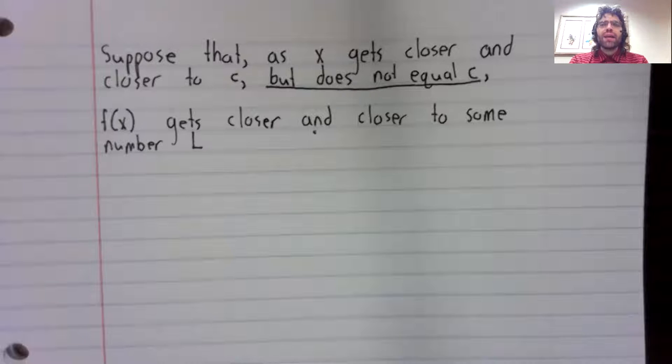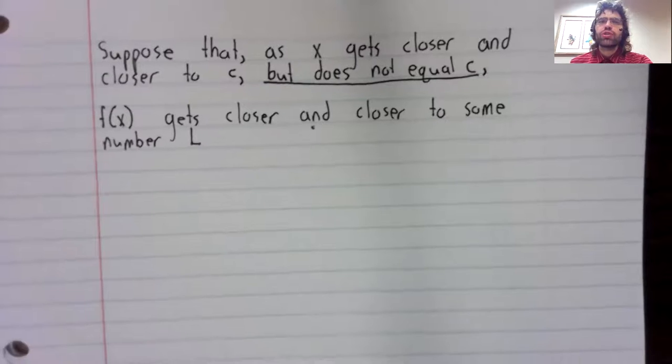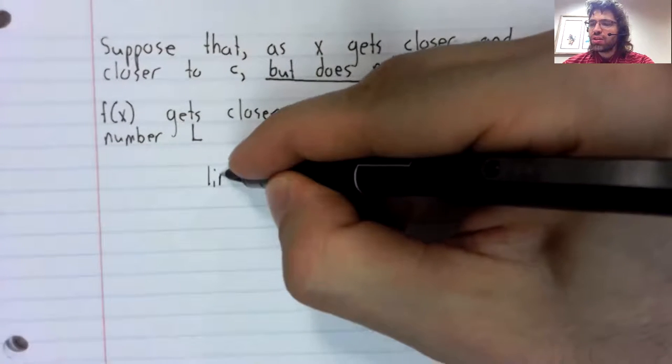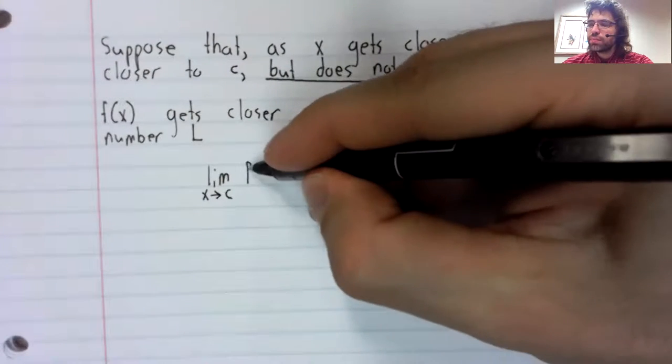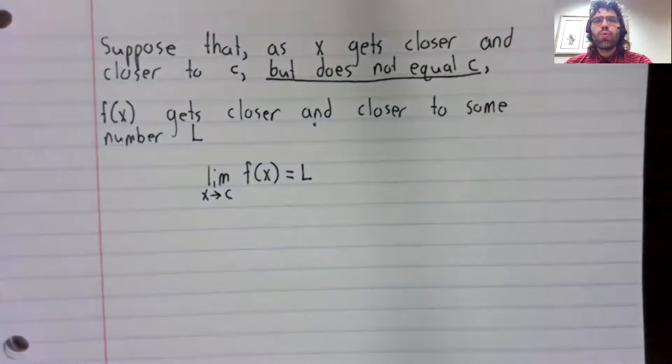Now we'll talk about x instead of h, but that's the same idea that we want to encapsulate. Suppose that x is getting closer and closer to some number c without actually reaching c. Suppose that as that happens, f of x gets closer and closer to some number L. Then we say that the limit as x approaches c of f of x equals L.